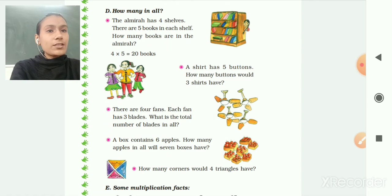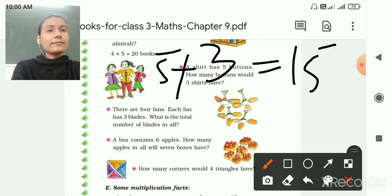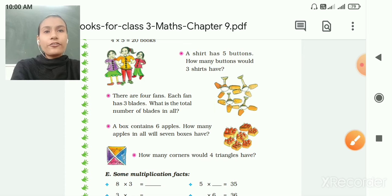Then next one. A shirt has 5 buttons. How many buttons would 3 shirts have? So here we will multiply 5 multiply by 3 is equal to 5 3s are 15. So 15 buttons.